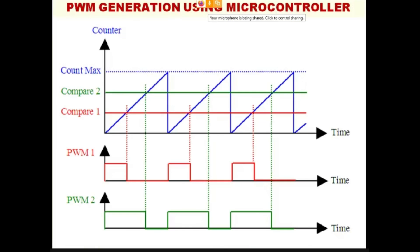Philips Hue lamps and Wipro multicolored LED lamps are working just because of pulse width modulation. Pulse width modulation can be generated with the help of a microcontroller.